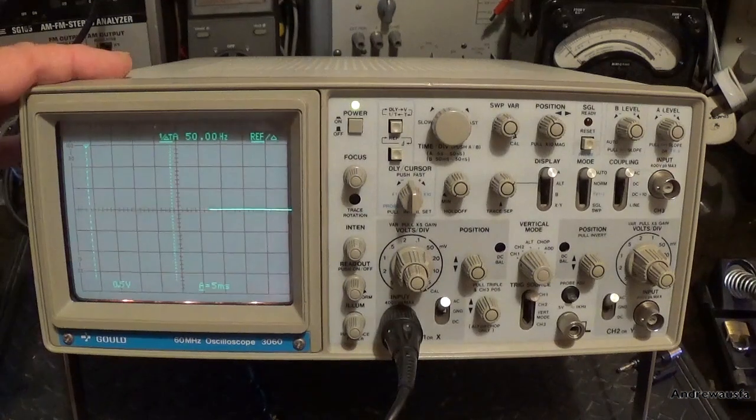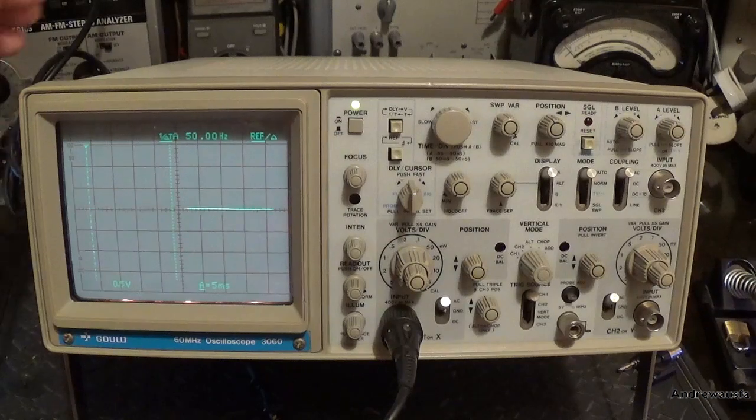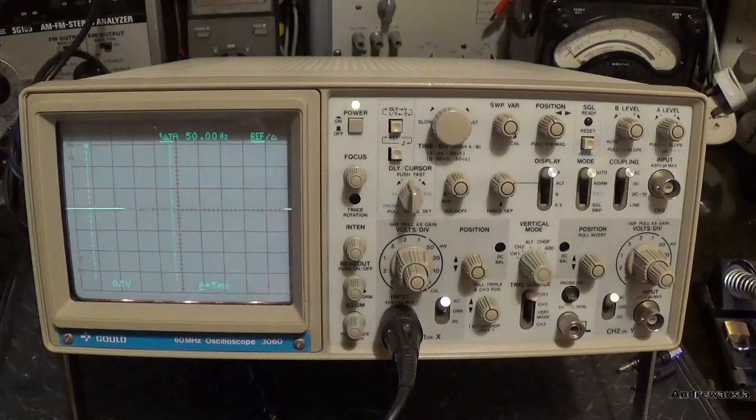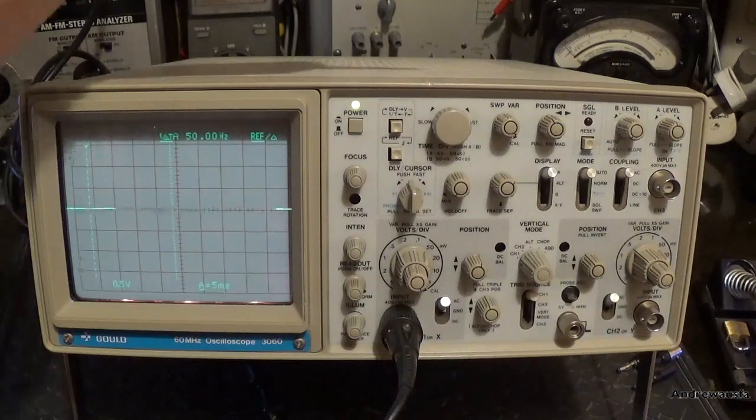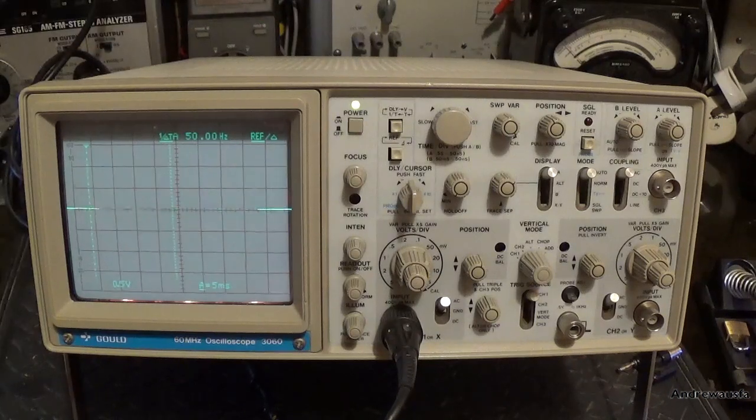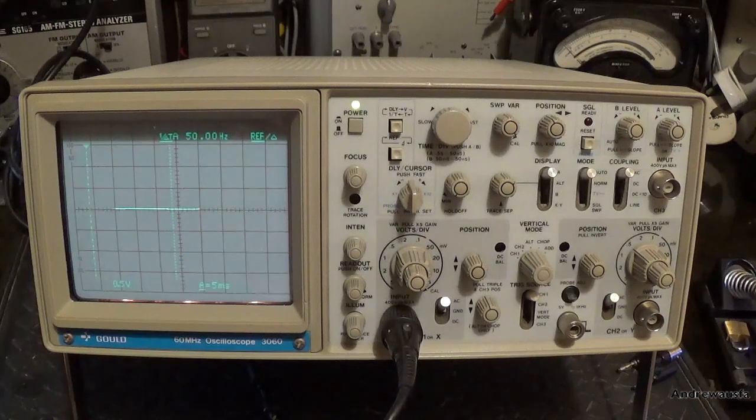I took the cover off. There was dust and dirt around the neck of the CRT as you would expect, not much around the high voltage box which is on this side, and just a little bit of dirt around the power supply. Nothing more than that, so I blew it all out and cleaned it up.